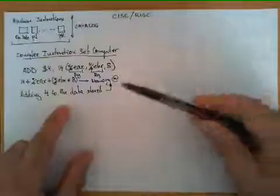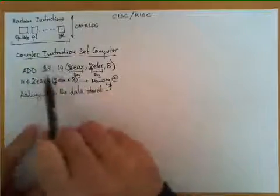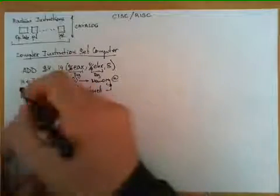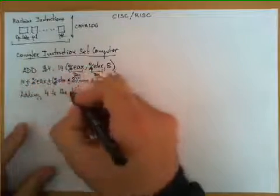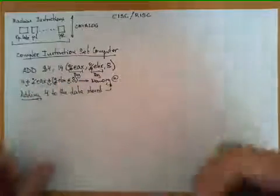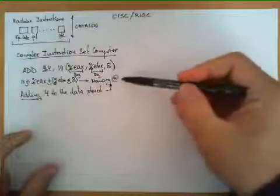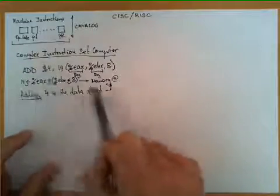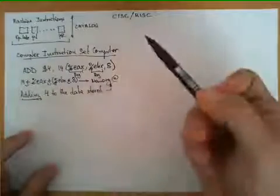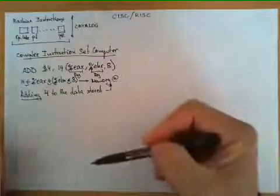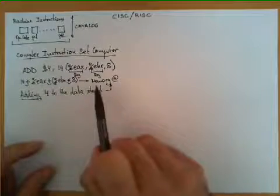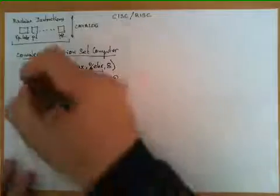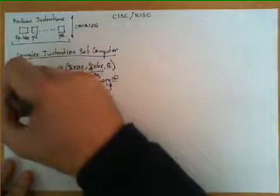So again, as we can see, the microprocessor capable of executing this instruction has to perform several arithmetic operations. One addition, another addition, a multiplication, and another addition, plus an access to memory. First, to obtain the operand, because we are adding the number 4 to whatever is stored in memory. So we first have to go to memory, get the operand, perform this addition, and then deposit the result again in memory. So from the point of view of a microprocessor, this is considered a complex machine instruction.